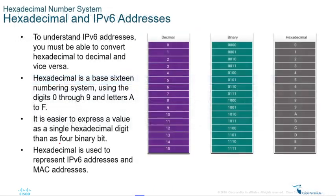Today we're going to look at how relevant hexadecimal and IPv6 are to each other, because remember we skipped IPv6 earlier. You first need to understand the link between the two. If you understand IPv6 you must be able to convert to hexadecimal and vice versa, and covering that vice versa — from decimal to hexadecimal — will help you understand IPv6 properly.